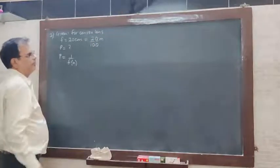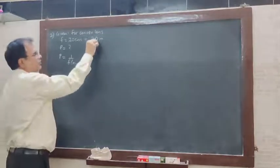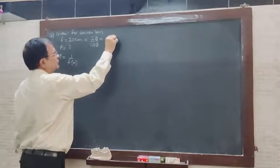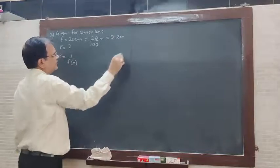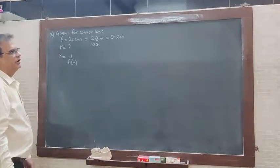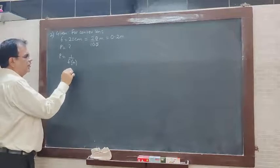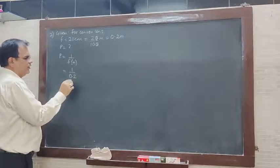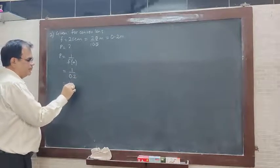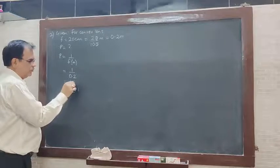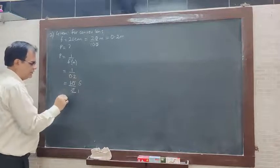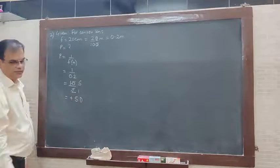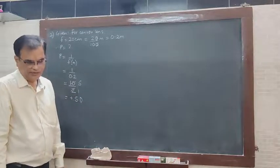This will become 0.2 meters. So focal length is equal to 0.2 meters. Therefore P is equal to 1 upon 0.2. Moving the decimal point: 10 upon 2 equals 5. So it is equal to plus 5 diopters. The power of the lens is 5 diopters.